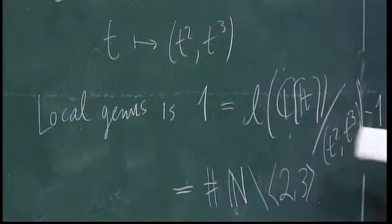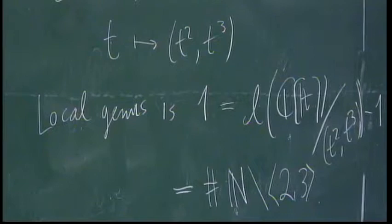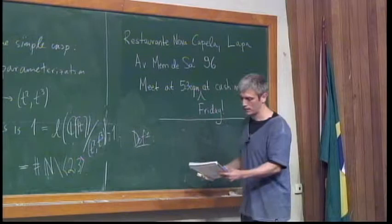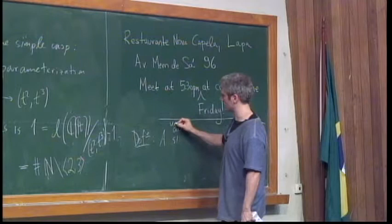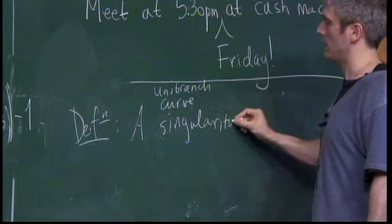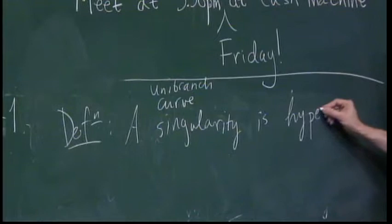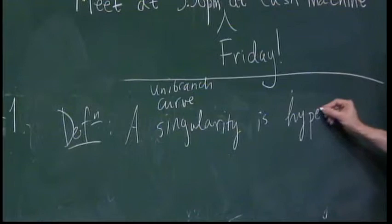This geometric story goes much farther. I want to make one definition — it's going to be useful to treat a distinguished subclass of these singularities separately. A unibranch curve singularity is called hyper-elliptic if 2 belongs to the associated semi-group of values.